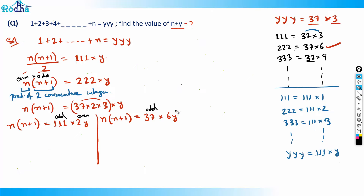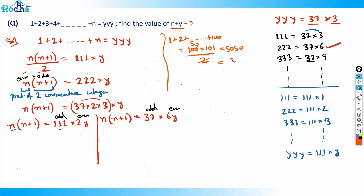In the first case, n would be around 111. But triple y is a three-digit number, so it cannot be five thousand something. For example, the sum from 1 to 100 is already 5,050 — way too large. So n cannot be 100 or more; that case is impossible. The value must be much smaller.